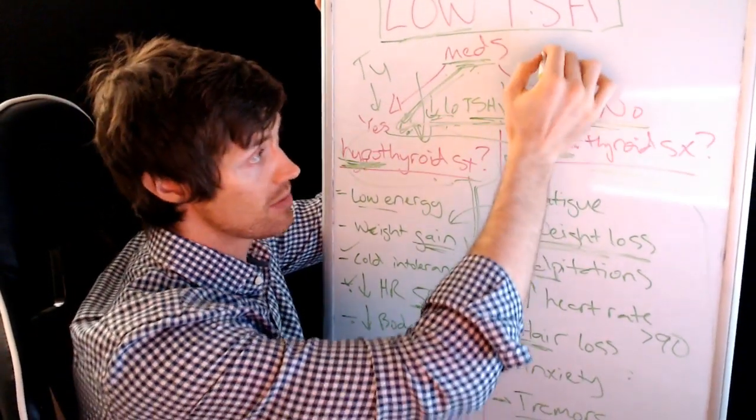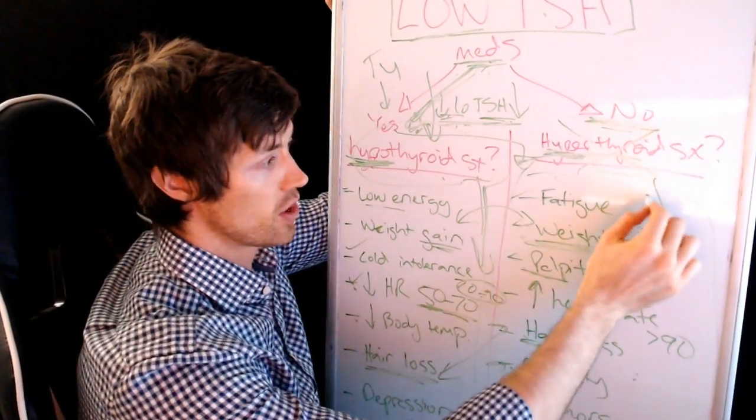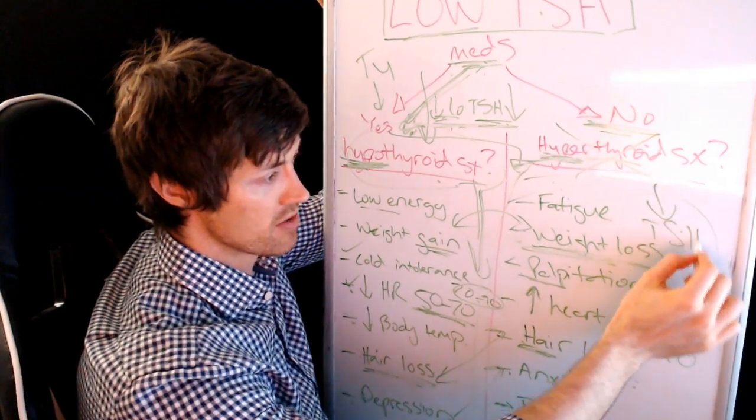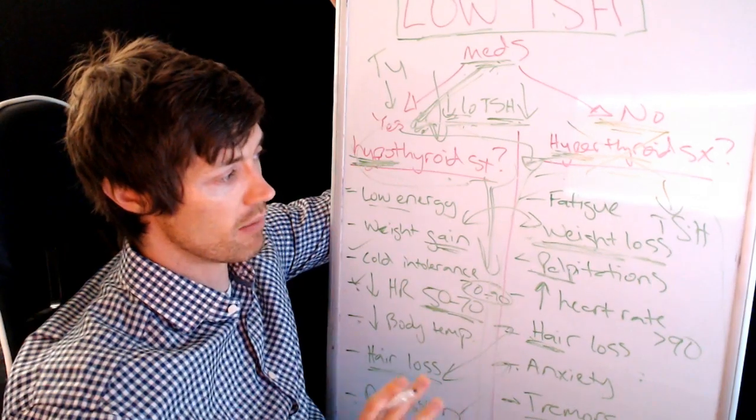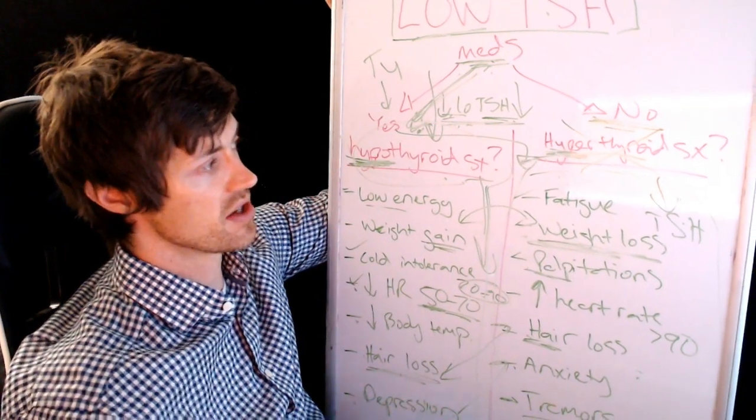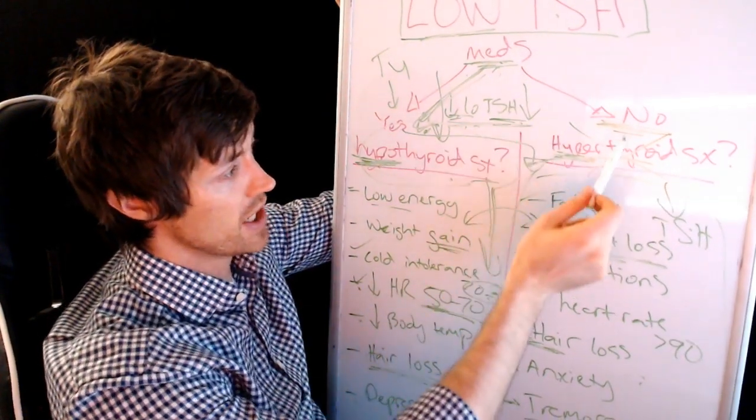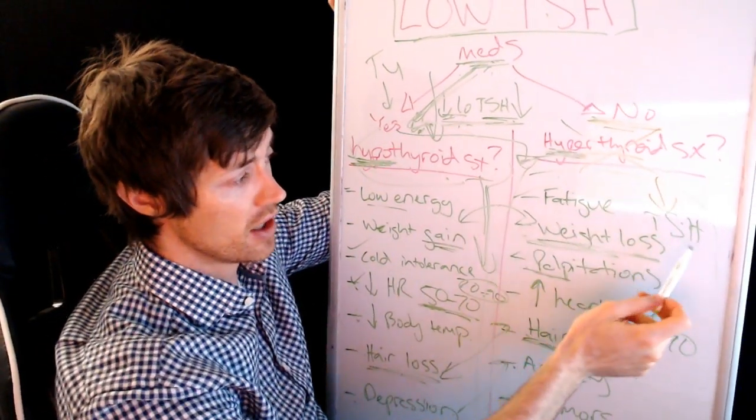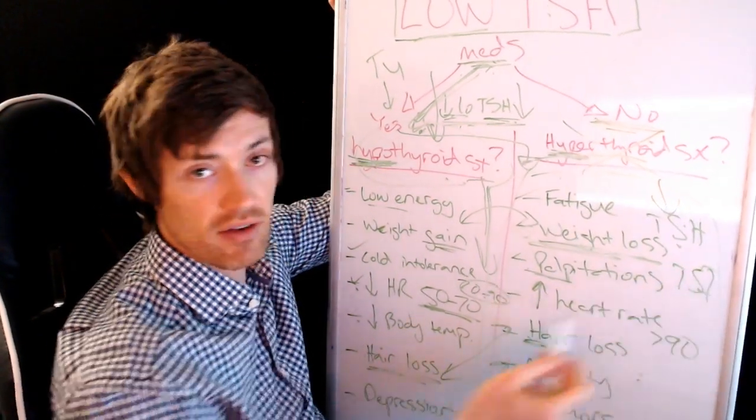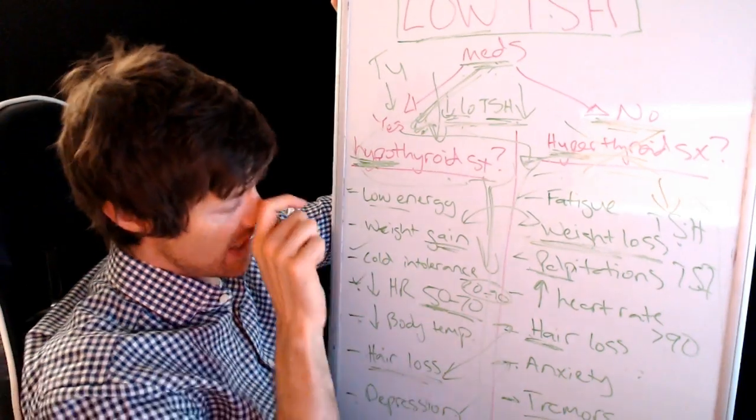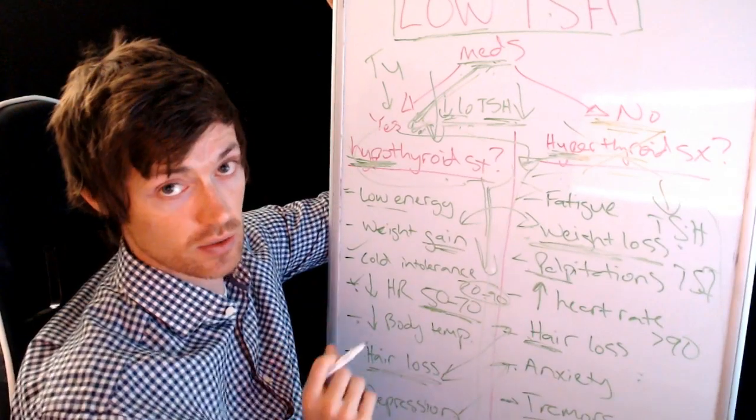So if you're not on thyroid medication, you have no symptoms, recheck your TSH in about two months and just keep an eye on it. You might want to also check your thyroid stimulating immunoglobulins, which is a test to check for Graves disease. But just to recap here, if you have a low TSH, you're not on medications and you're asymptomatic, recheck in two or three months. If you are symptomatic, you want to check these TSI antibodies to see if you have a condition known as hyperthyroidism. And so these are the symptoms associated with a low TSH, but remember they vary depending on the cause of that low TSH.